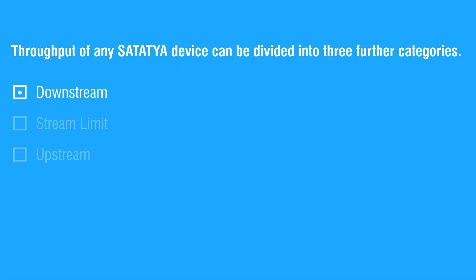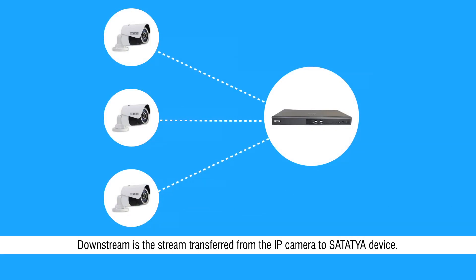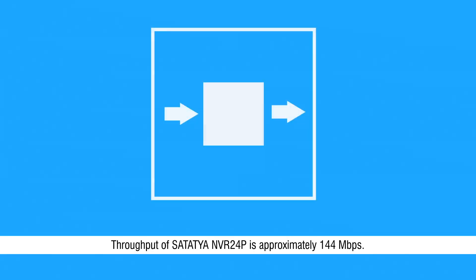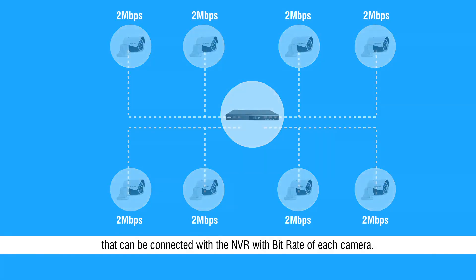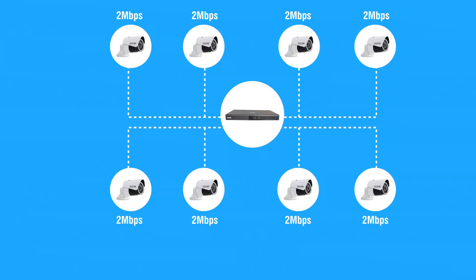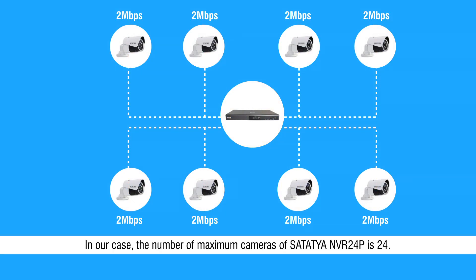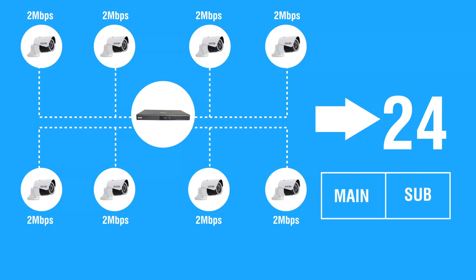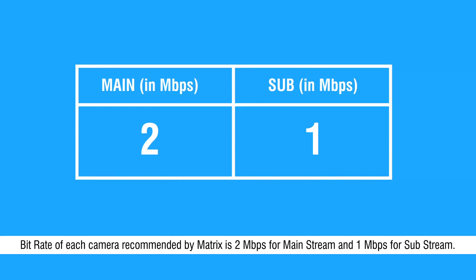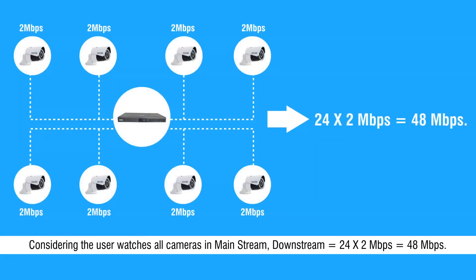Downstream is the stream transferred from the IP camera to the Satathya device. Throughput of Satathya NVR-24P is approximately 144 Mbps. Downstream can be easily calculated by multiplying the number of maximum cameras that can be connected with the NVR by the bitrate of each camera. In our case, the number of maximum cameras of Satathya NVR-24P is 24. The bitrate of each camera recommended by Matrix is 2 Mbps for mainstream and 1 Mbps for substream. Considering the user watches all cameras in mainstream, downstream is 24 × 2, that is 48 Mbps.